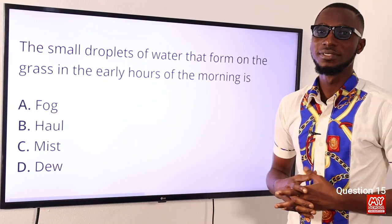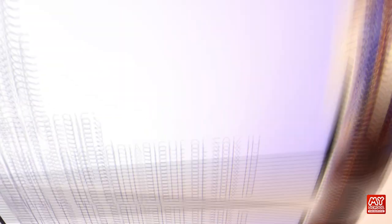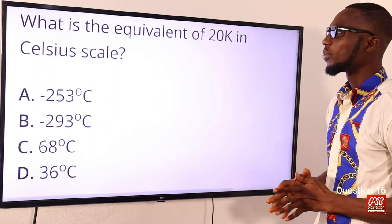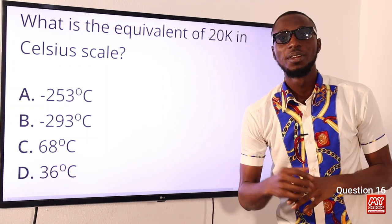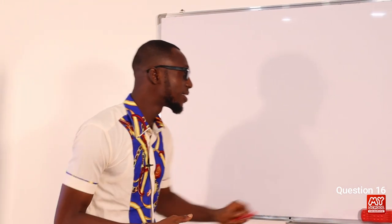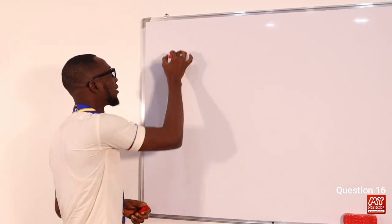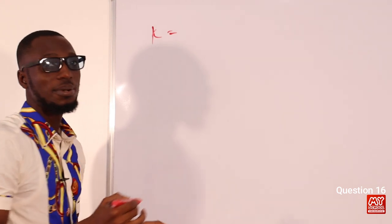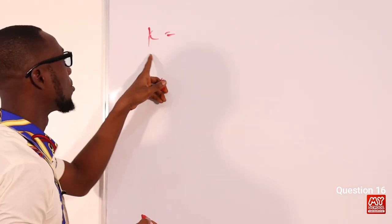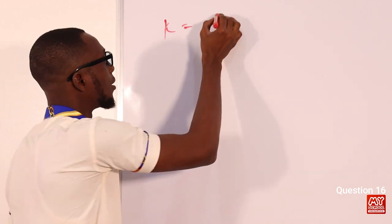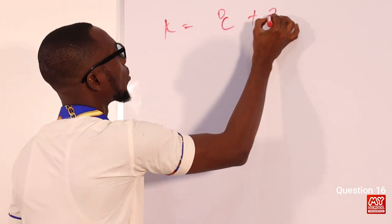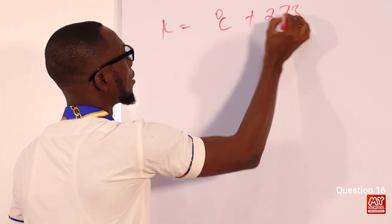Question 16: What is the equivalent of 20 Kelvin in the Celsius scale? We use the concept of the Kelvin scale. Remember: to convert temperature to Kelvin, you say K = °C + 273.